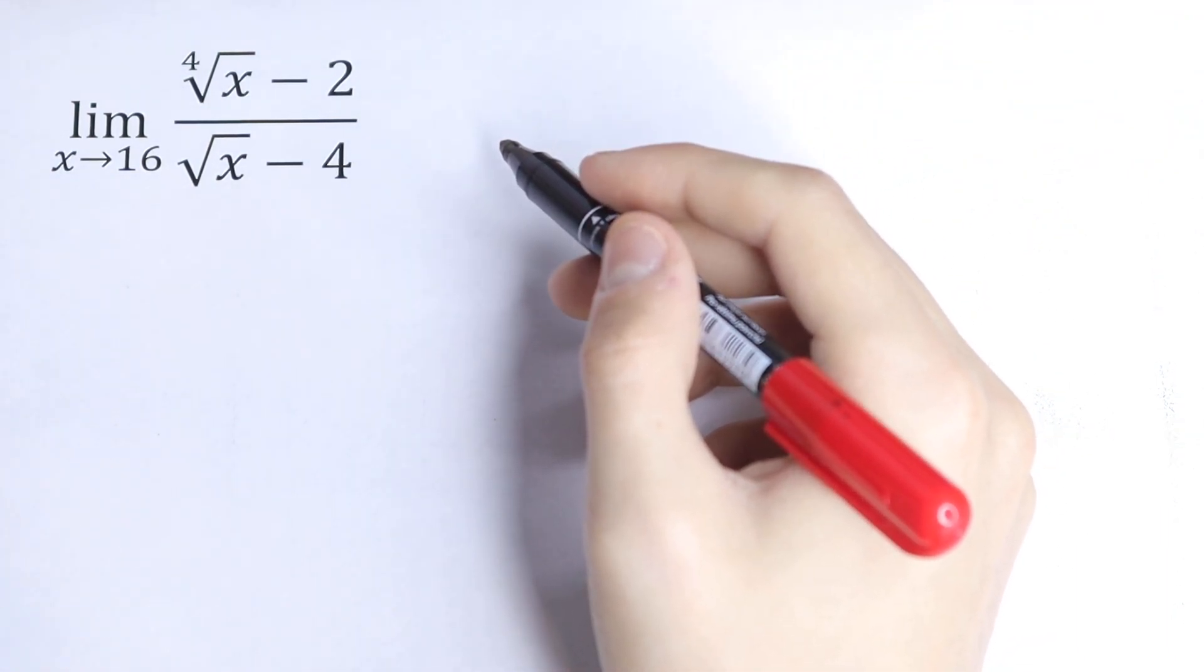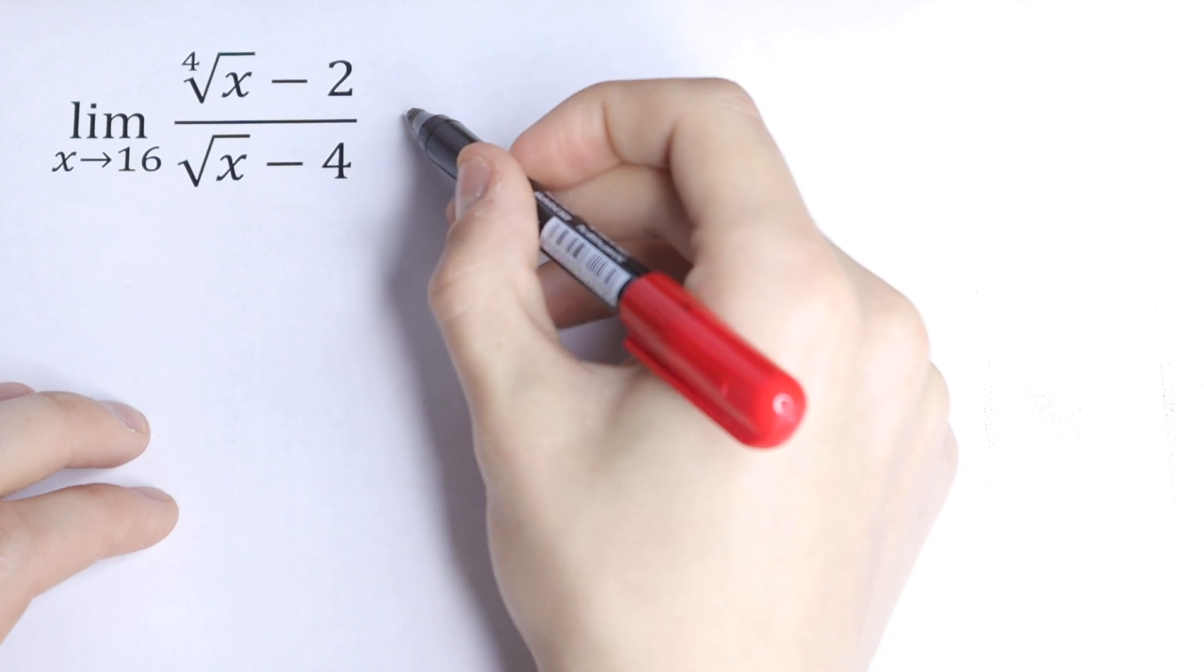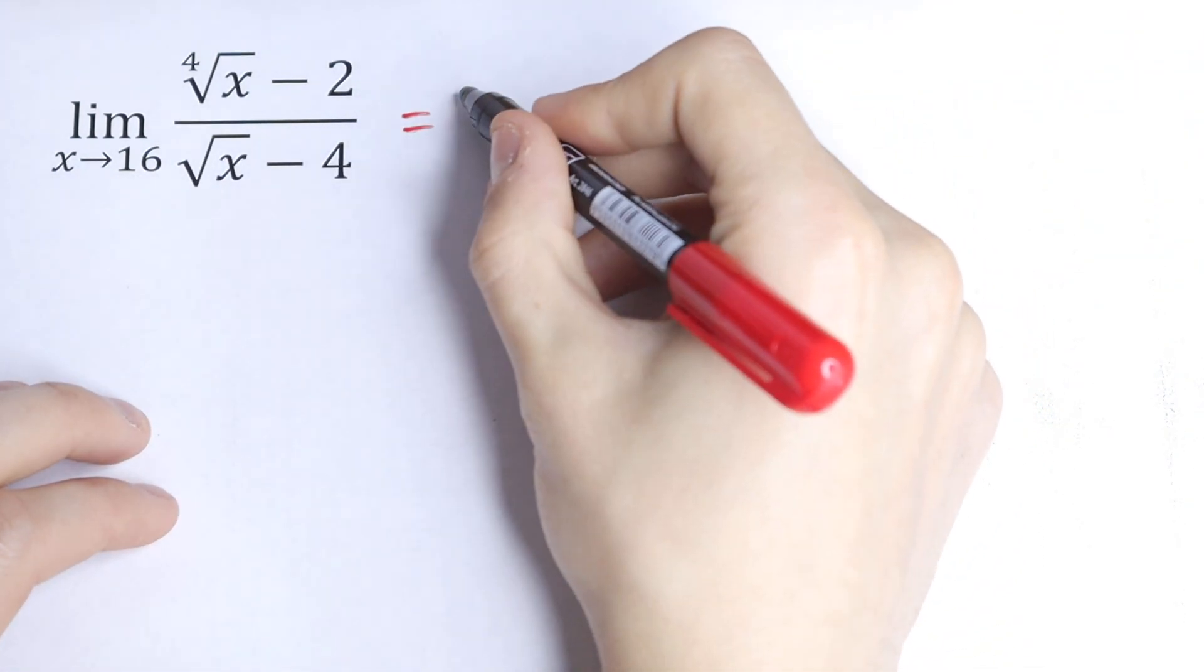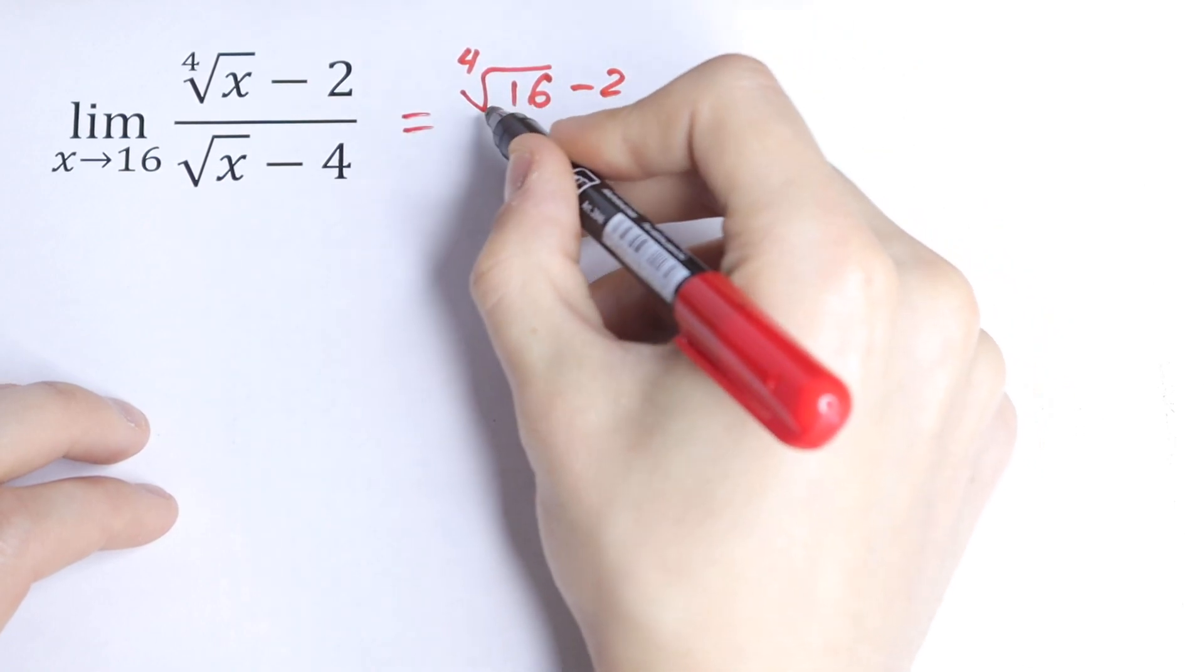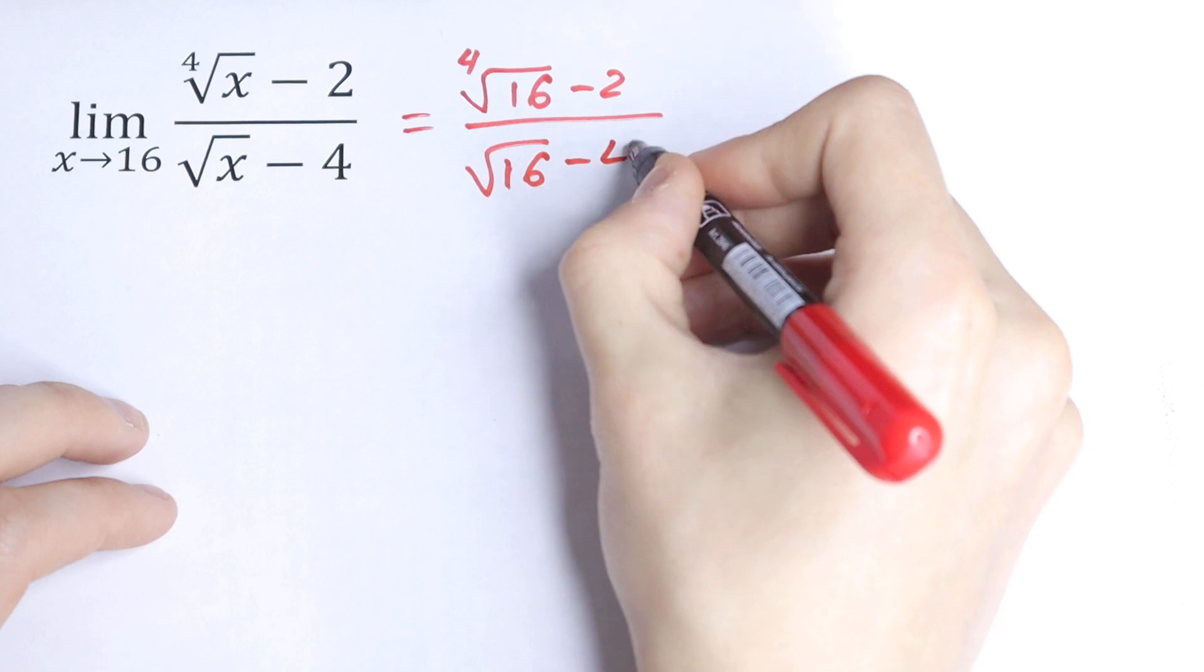The first way is to use direct substitution. Let's do this. Let's plug in 16. So we will have this equal to 4th root of 16 minus 2 over square root of 16 minus 4.